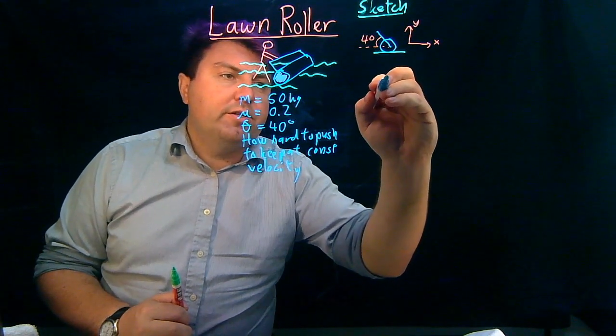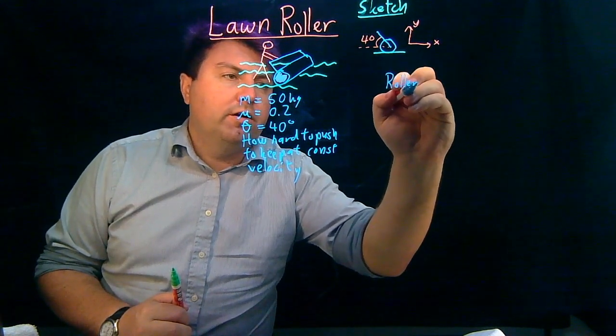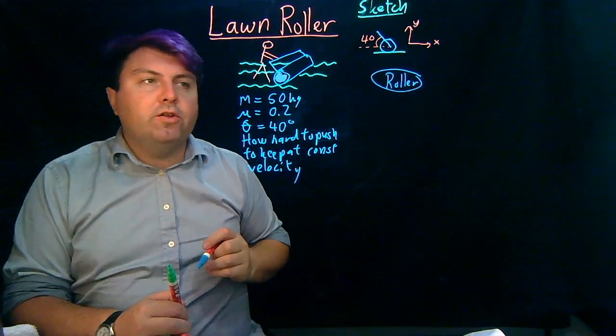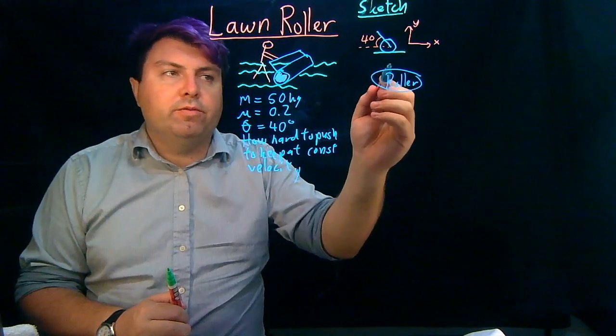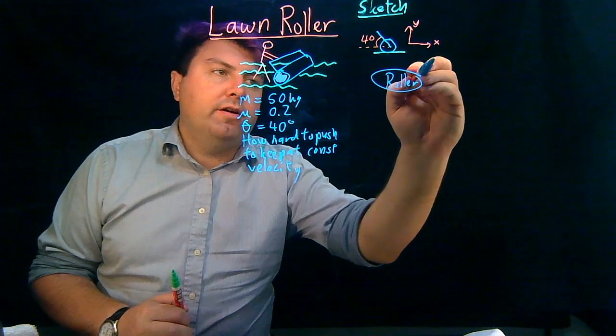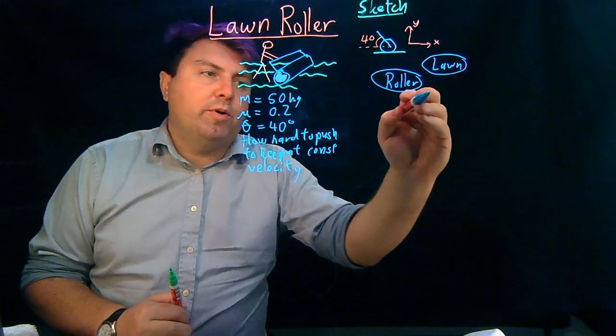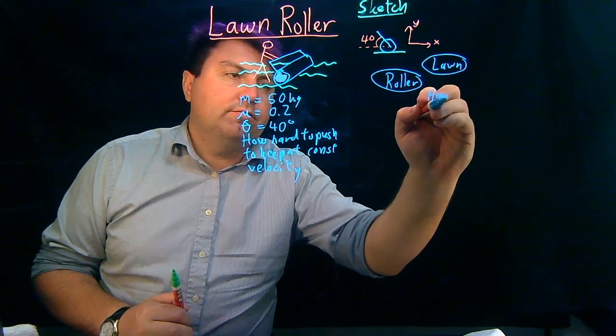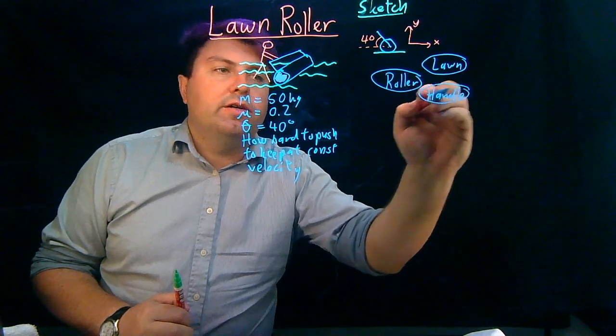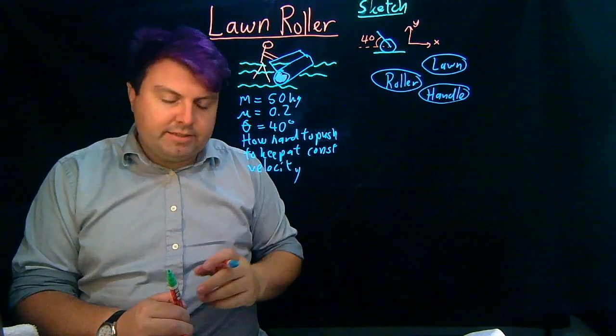So our interaction diagram is going to start with the roller as an object, and we're going to look at what is in contact with the roller. So the ground is definitely in contact with the roller, or we can say the lawn, and the handlebar is in contact with the roller, and that's that.